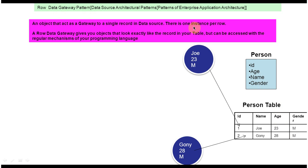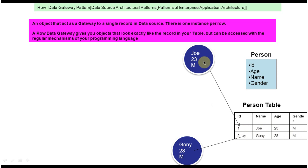As per the Row Data Gateway pattern, an object acts as a gateway to a single record in the data source and there is only one instance per row. Currently we have two rows — the first row represents Joe and the second row represents Goni. If we create an object out of the first row, it will look like this: Joe, 23, male — the first person object. And if you create an object of the second row, it will look like this: Goni, 28, male.